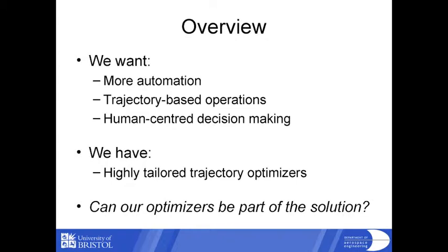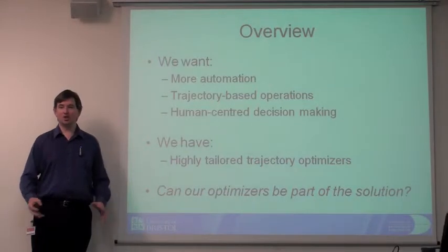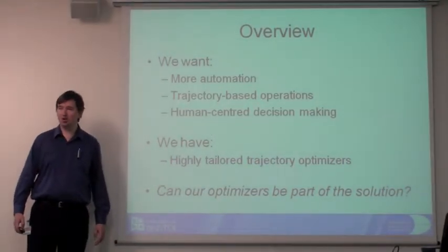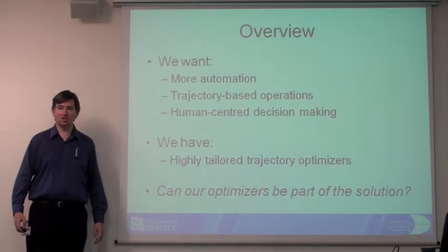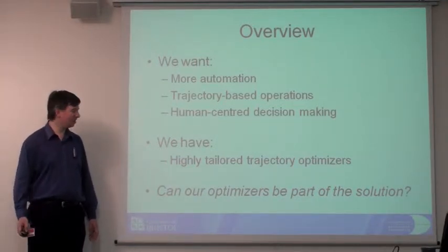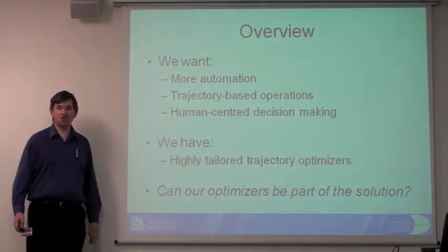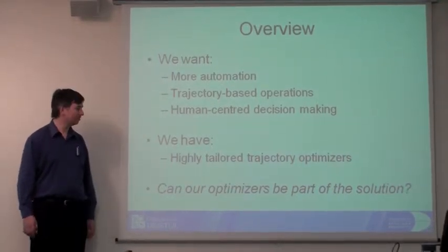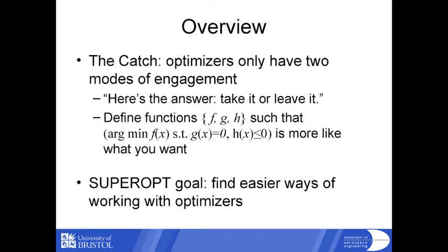Our plan: if we pick out from various parts of the CESAR concept of operations and master plan, you'll find these desires - the desire for greater use of automation, the desire for trajectory-based automation, and for the human still to be at the center of decision making. If you go out into the research community, what you'll find is that we already have an awful lot of trajectory optimizers. People in robotics and control have been looking at these things for years. Our question in SuperOpt is whether or not these optimizers can be part of the solution to the problems we've posed ourselves. The catch is that the optimizers we have aren't particularly well developed for human interaction - that's simply not what they've been designed to do.